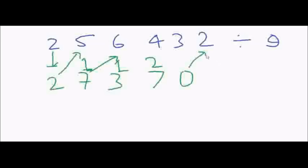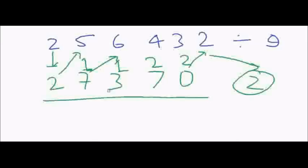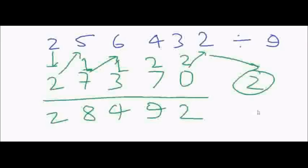22 with carry 2 — so 2 is the remainder here. So this particular number is not divisible by nine, and the remainder is 2. Our answer is 2, 8, 4, 9, 2 with remainder 2. I think the trick is clear to you, so let's have fun with this trick in your exams.